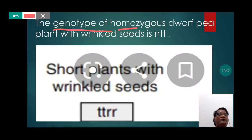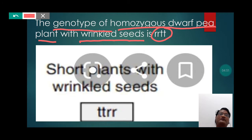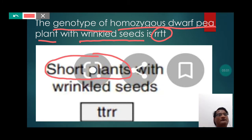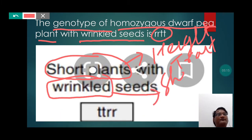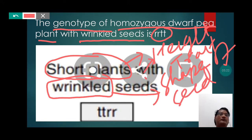The genotype of homozygous dwarf pea plant with wrinkled seed is small t, small t, small r, small r. In this pea plant also, two traits are being considered: the short plant represents the height — the first trait — and the shape of seed is the second trait. So in total, two traits are being considered, and the genotype is represented by tt rr.